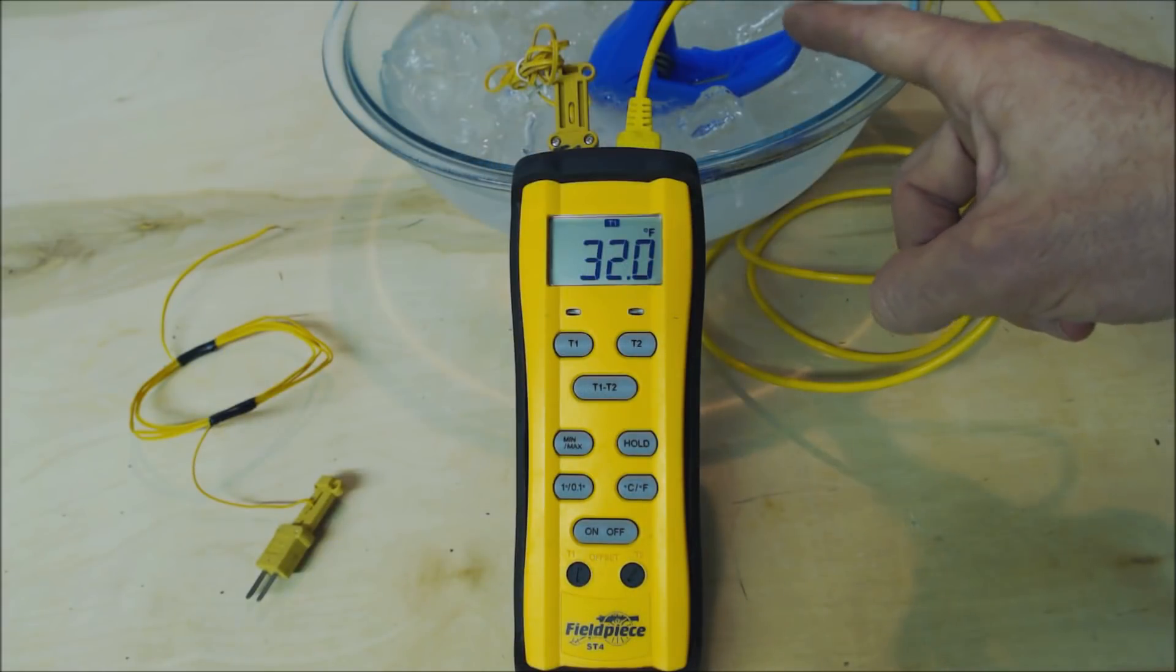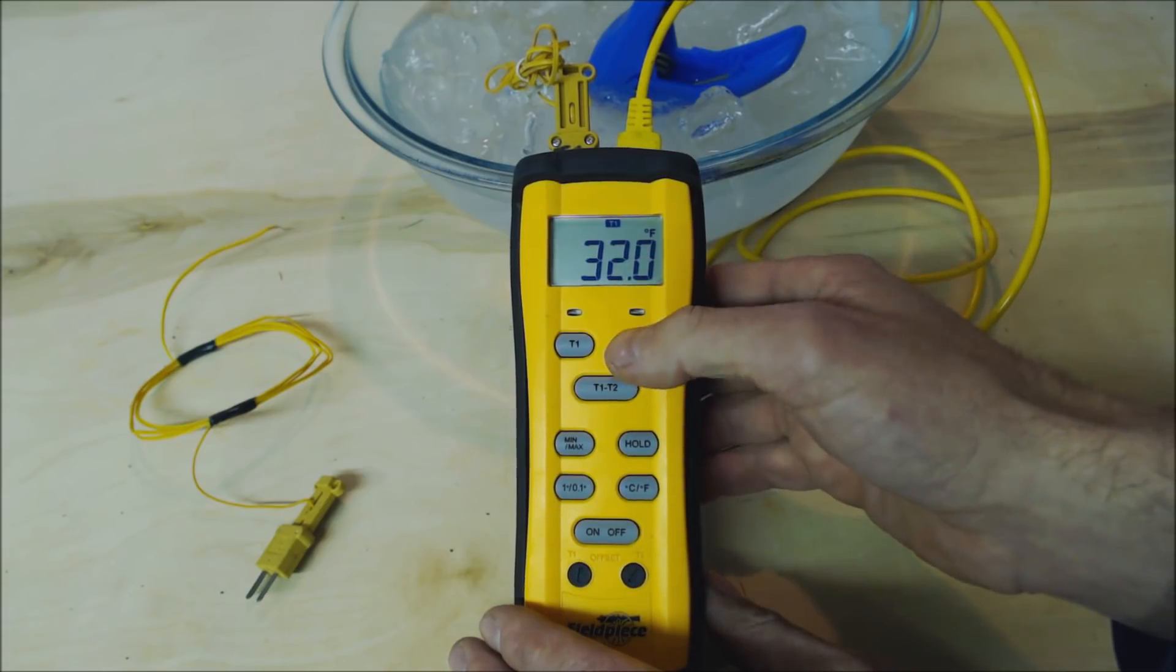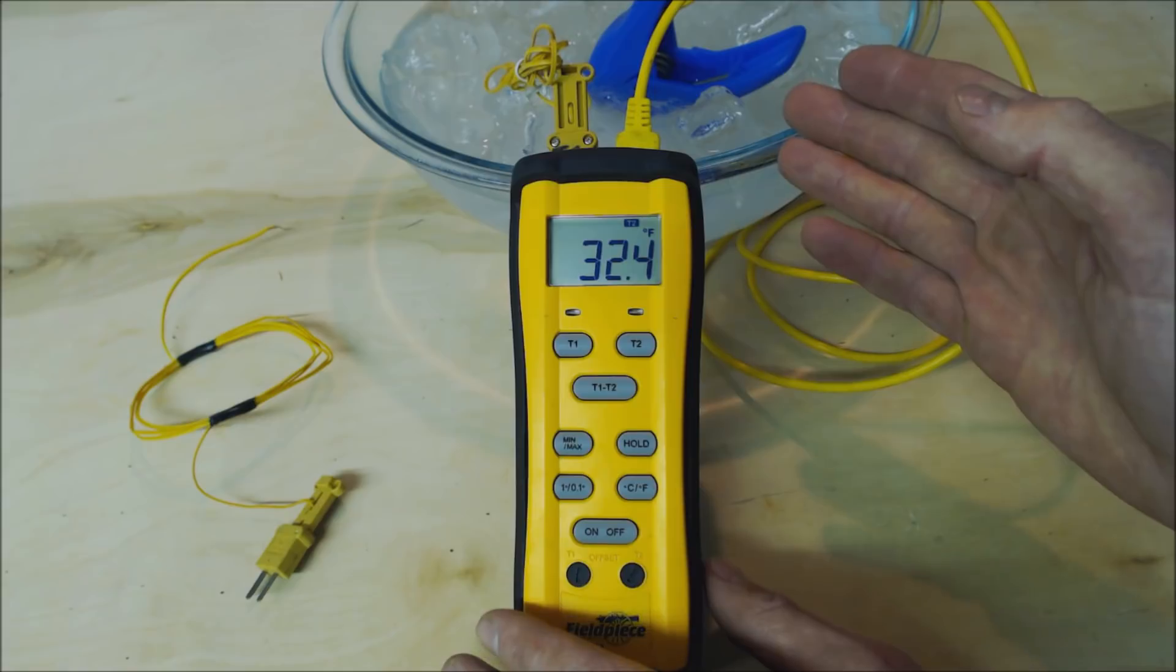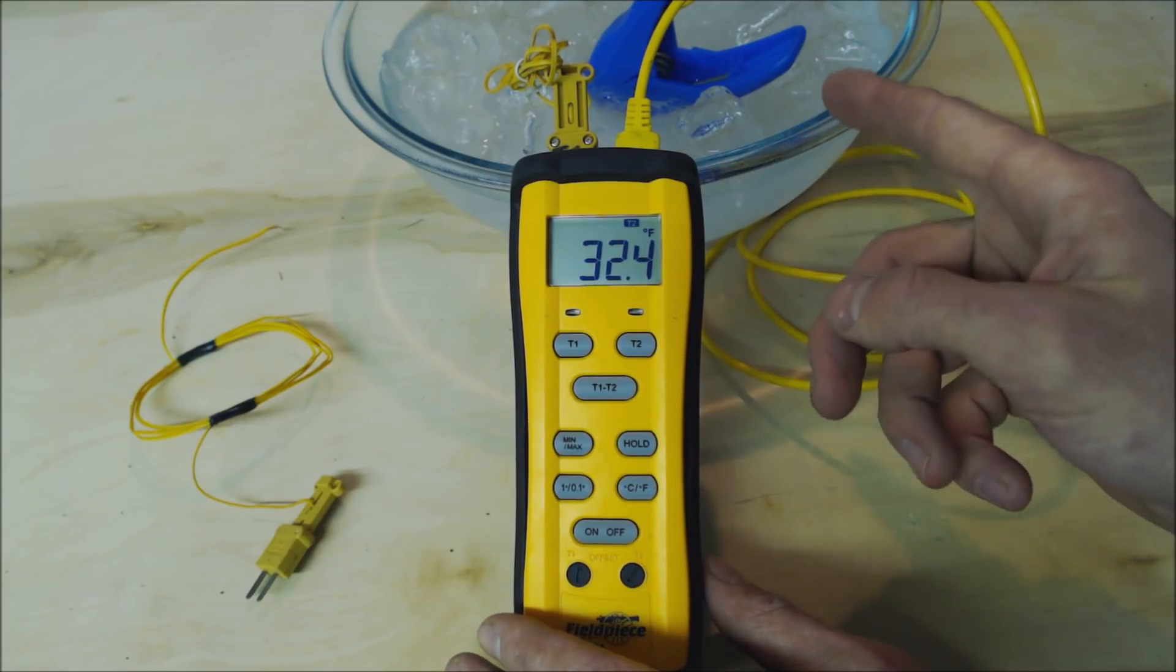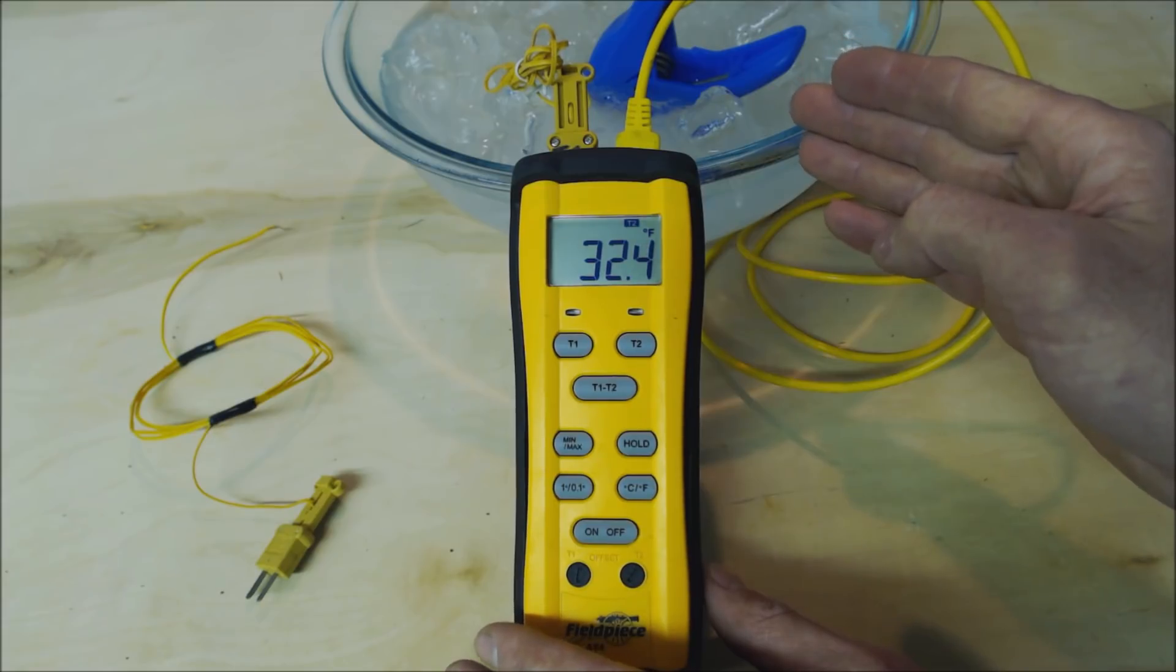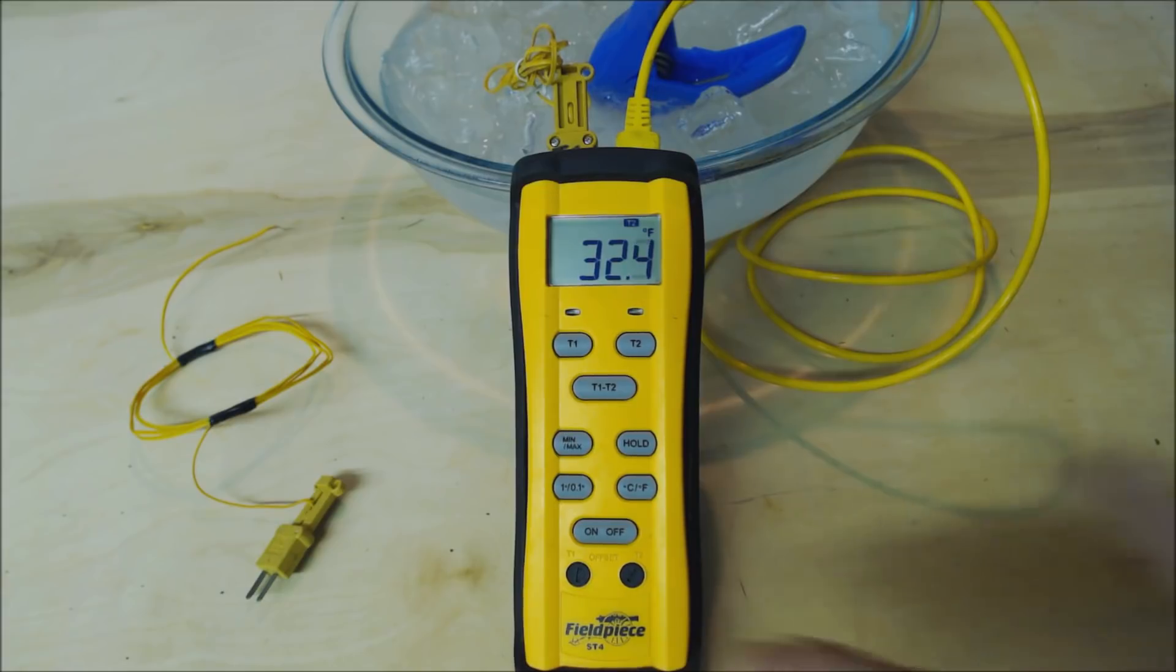This clamp has been sitting in this ice water for about five minutes. On T1 we're reading 32 degrees and let's go over to T2 and it's really not bad at all actually. 32.4. So it's only 0.4 degrees off. So that one happened to do very well. We would just need to adjust this counterclockwise to get it down to 32 and we'd be good to go.